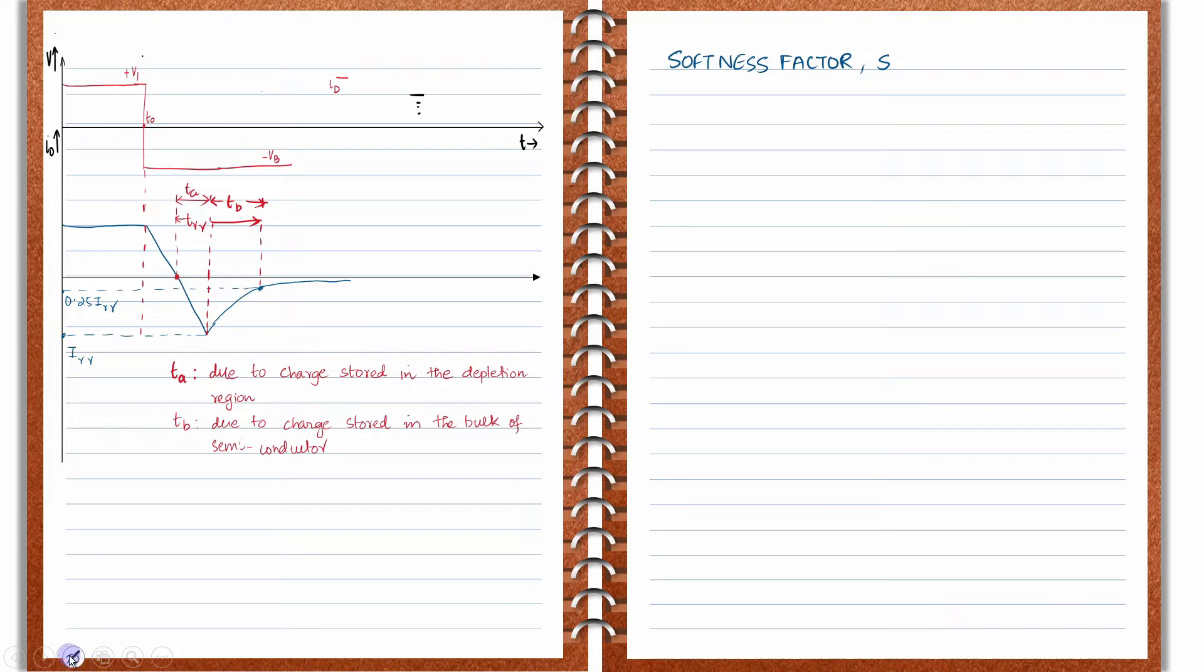When we discussed the reverse recovery characteristics, we already saw these definitions of the time TA and TB. TA was due to the charge stored in the depletion region, and TB is due to the charge stored in the bulk of the semiconductor. You know that TRR, which is the total reverse recovery time, is the sum of TA and TB.